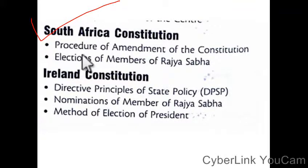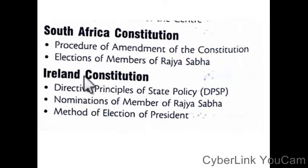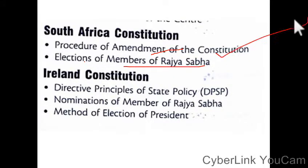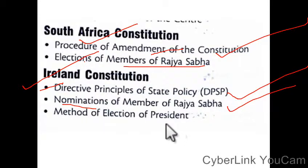South Africa — the amendment of the constitution is from South Africa. Also from South Africa: Directive Principles of State Policy (DPSP) and the nomination of members to the Rajya Sabha.